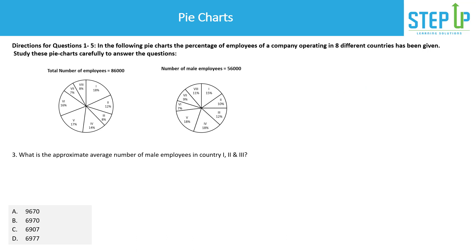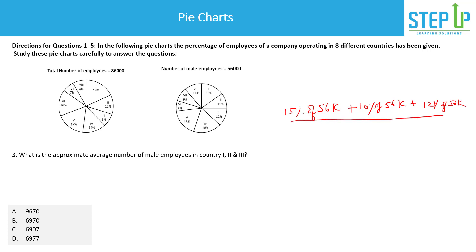The third question asks: what is the approximate average number of male employees in countries 1, 2, and 3? Male employees in those countries are 15%, 10%, and 12% of 56,000 respectively. Since they share the same base, we don't need to calculate each separately. We just add the percentages: 15 + 10 + 12 = 37, then divide by 3, giving 37/3 ≈ 12.33% of 56,000.